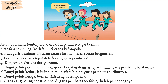Aturan bermain: 1. Anak-anak dibagi ke dalam beberapa kelompok. 2. Buat garis pembatas lintasan antara lari dan jalan secara bergantian. 3. Berdirilah berbaris tepat di belakang garis pembatas. 4. Dengarkan aba-aba dari guru. 5. Bunyi peluit pertama, lakukan gerakan berjalan dengan cepat hingga garis pembatas berikutnya.